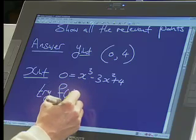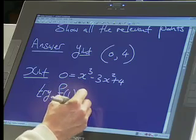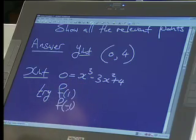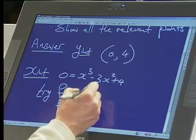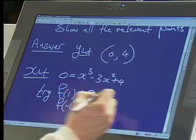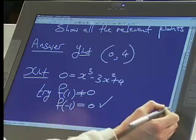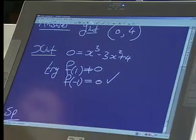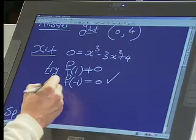f of 1, f of minus 1, are you with me? Yeah, the answer is f of minus 1. Okay, so f of 1 doesn't equal 0. f of minus 1 does equal 0. So it works. Yeah. Great. So that means that x plus 1 is a factor. Great. x plus 1 is a factor.